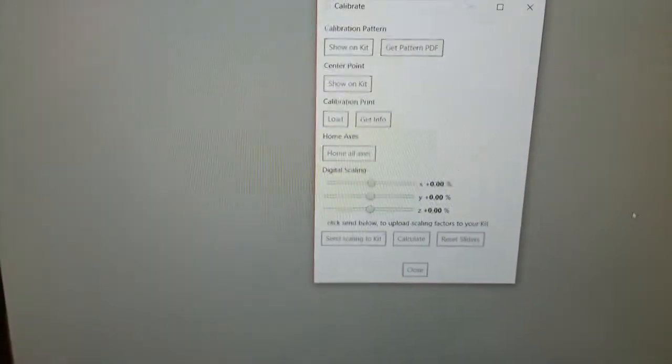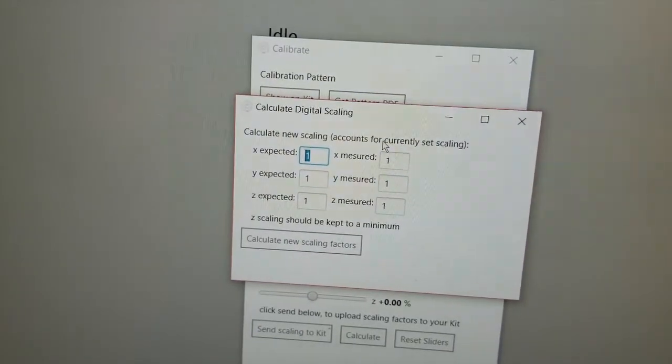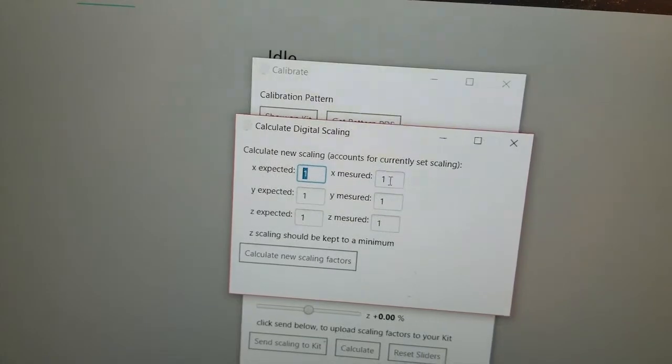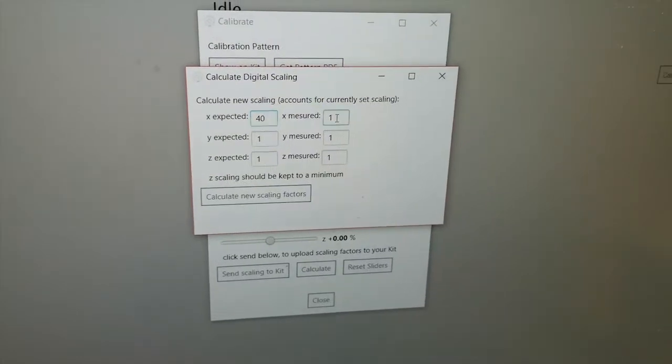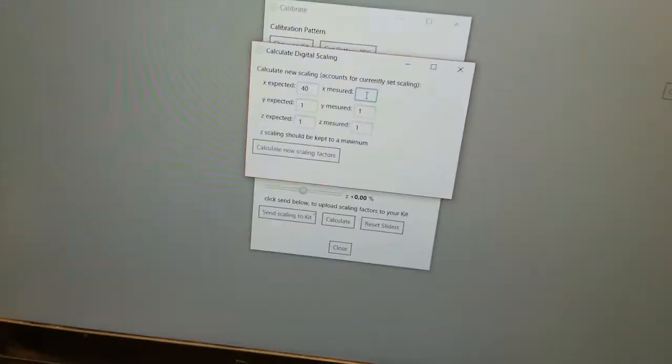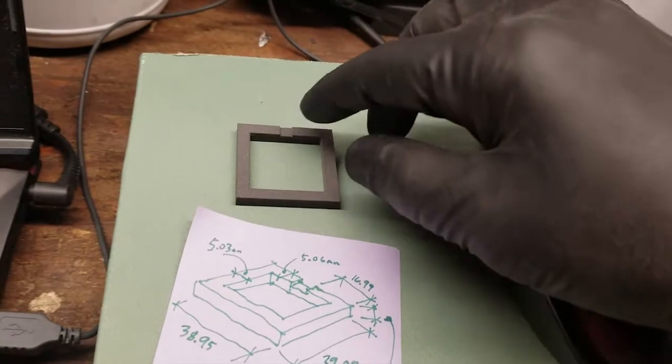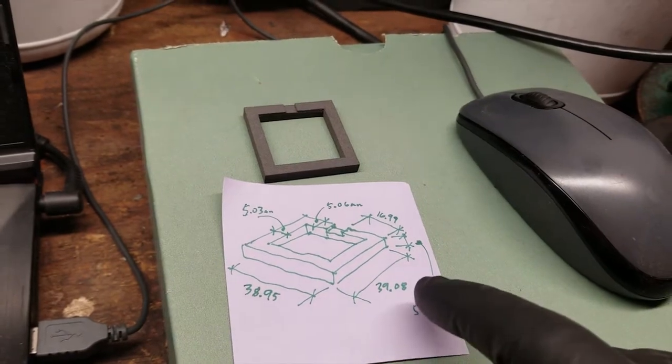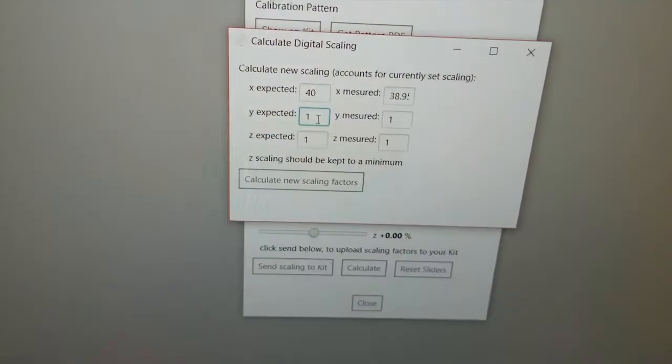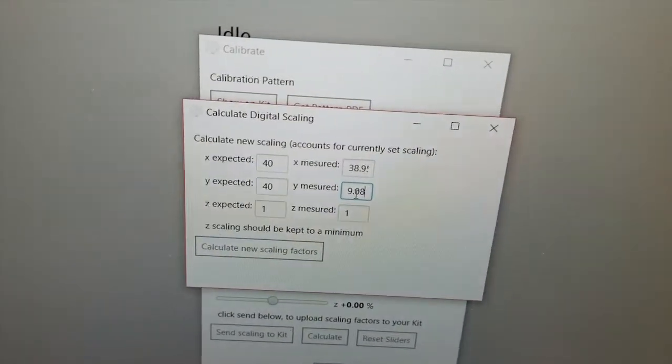Anyway, there are the numbers. So then you go down to calculate and they got a whole nother menu here. You need to calculate how many millimeters it is and then you put down what you actually measured it at. So in the x direction, the little square is supposed to be 40 millimeters across, but what I ended up measuring, so on the print the little notch is up and that's toward the y, so my y direction is 39.08, my x direction is 38.95. That's supposed to be 40 as well, and that one's 39.08.